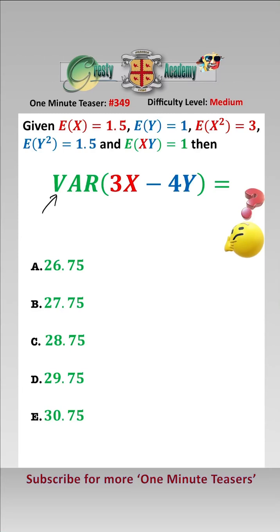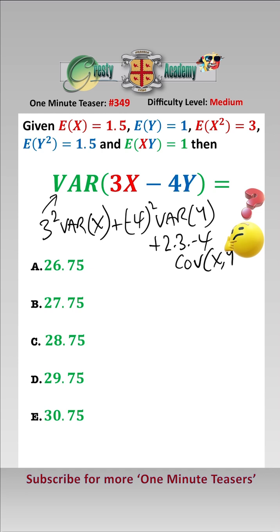So we can rewrite this as 3 squared times the variance of x, add minus 4 squared times the variance of y, add 2 times 3 times minus 4 times the covariance of x and y.